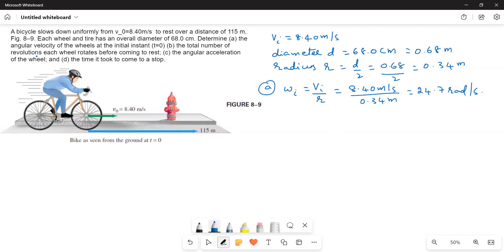The total number of revolutions each wheel rotates before coming to rest. How many full circles will one wheel make over 115 m? One revolution equals 2πr, the circumference of the circle.